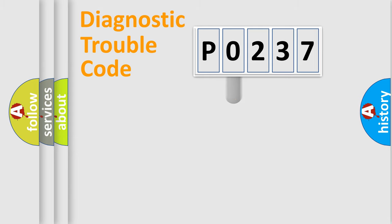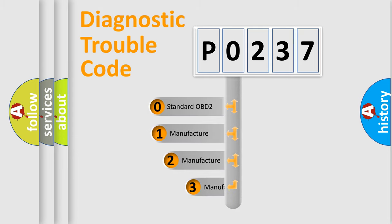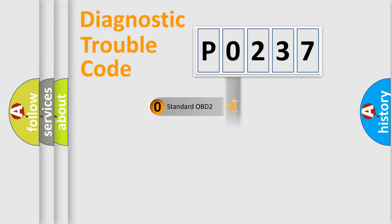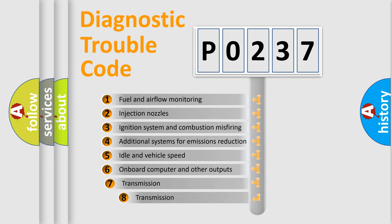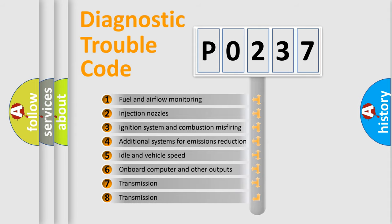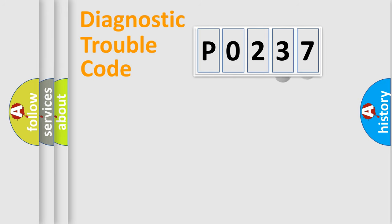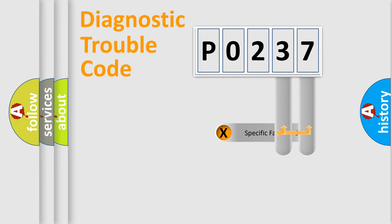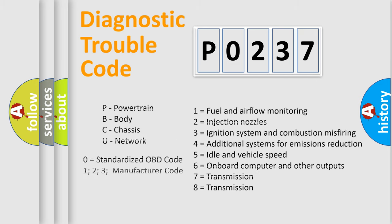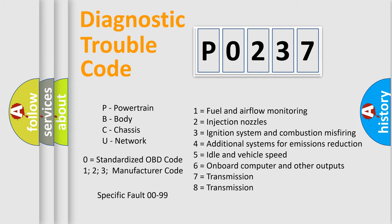This distribution is defined in the first character of the code. If the second character is expressed as zero, it is a standardized error. In the case of numbers 1, 2, or 3, it is a manufacturer-specific error code. The third character specifies a subset of errors. The distribution shown is valid only for the standardized DTC code, and only the last two characters define the specific fault of the group. This division is valid only if the second character is expressed by the number zero.